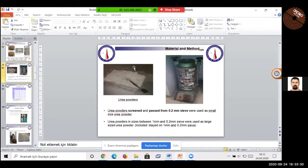First, this is the UREP powders. UREP powders that passed through the 0.2 mm sieve were used as small size UREP powders. And the UREP powders in size between 1 mm and 0.2 mm sieve were used as large size UREP powder, retained on 1 mm and 0.2 mm sieve.